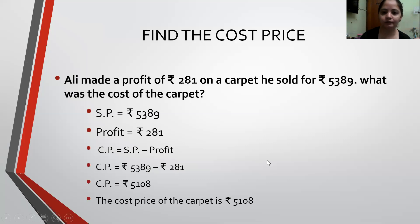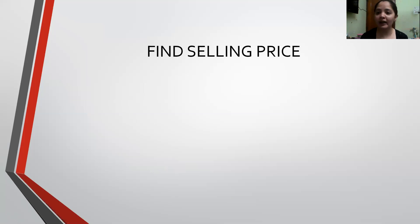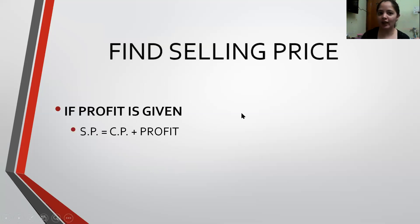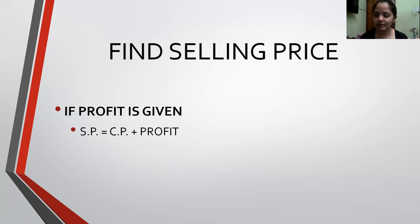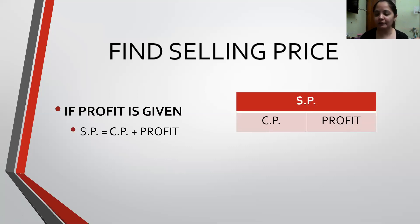Now let's move ahead to the Selling Price. We have to find the Selling Price. Cost Price is already given to us, and either Profit or Loss will be given. Here it will be the reverse of what we did for Cost Price. If I have to find the Selling Price and Cost Price and Profit are given, I add them to get the Selling Price. If it is Profit, Selling Price is more, so adding two smaller amounts gives me the bigger Selling Price: Cost Price plus Profit equals Selling Price.